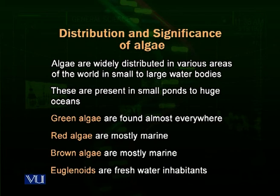Red algae are used to produce different types of products, including cosmetics and certain types of foods. Brown algae are specifically used for making agar from seaweeds, and some types are also used for salad dressings. Golden brown algae are very important and are used in making some petroleum products. Euglenoids are important as the main producers of fresh water ecosystems.